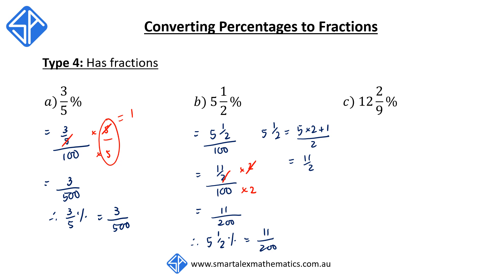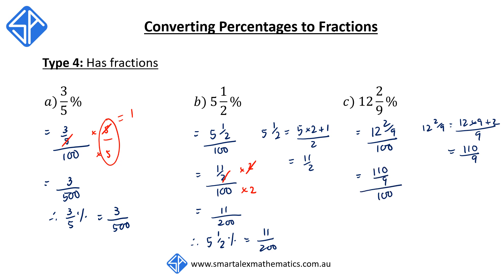Our last example: 12 and 2 ninths percent. We write this as 12 and 2 ninths over 100. We convert 12 and 2 ninths to an improper fraction: 12 times 9 plus 2 over 9, which is 110 over 9. We rewrite this as 110 over 9 out of 100, then multiply top and bottom by 9. The 9s cancel, giving 110 on top and 900 on the bottom. Crossing off the 0 — dividing by 10 — gives 11 over 90. Therefore, 12 and 2 ninths percent as a fraction is 11 out of 90.